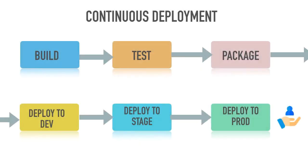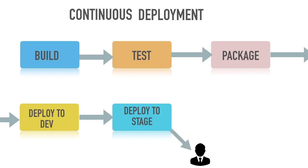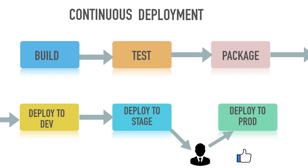After continuous integration became really commonplace, one of the release managers in an organization started looking into this process of continuous automated deployment. He would have thought: everything is automated here, so where do I fit in? That's probably when he decided to inject himself into the process — saying you can do whatever you want up to staging, but when you want to deploy to production, you have to ask my permission, and only if I give the thumbs up can you deploy.